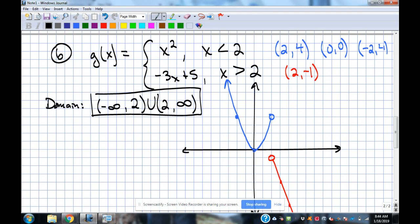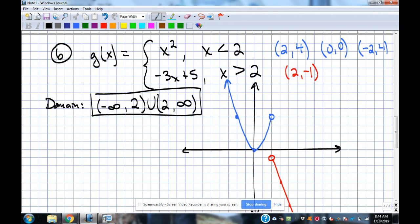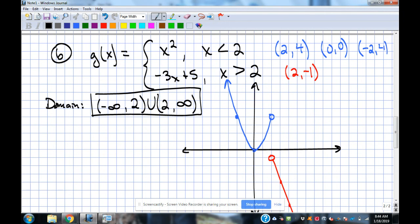If it were, if it had like x squared plus 3x minus 7, like a whole thing, you could do the negative b over 2a and then plug that back in to get the y value for that. But because it was just plain x squared, it always is going to be 0, 0 for it. But if there's some other stuff in there, you've got to do that negative b over 2a that we did back in algebra 2.